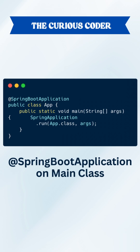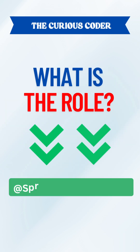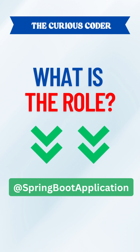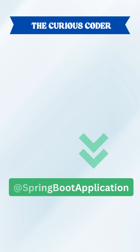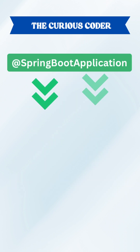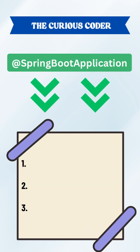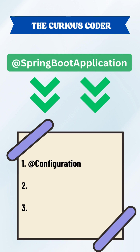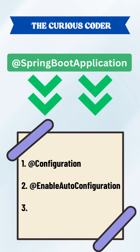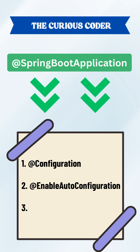You have seen @SpringBootApplication on the main class. But do you know what it really does? It's more than just a label — it bundles three powerful annotations that make Spring Boot work like magic: @Configuration, @EnableAutoConfiguration, and @ComponentScan.